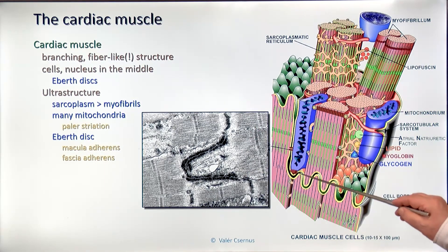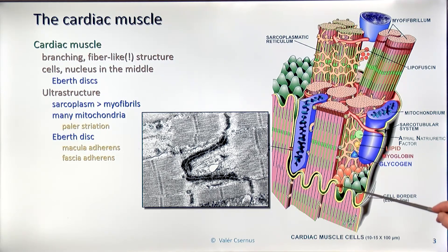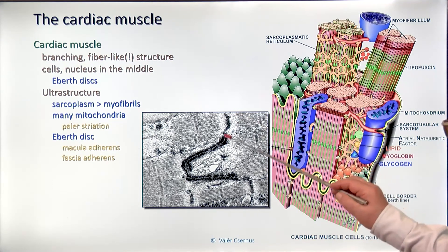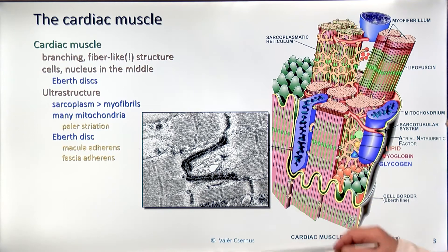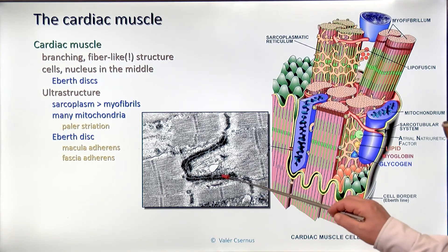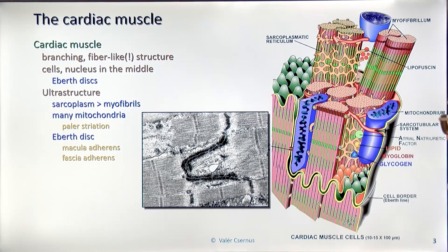The Ebner discs are the borderlines between the cells. They are wavy, finger-like processes. This is why the surface is increased, creating a much stronger attachment between neighboring cardiac muscle cells which pull each other — very important not to get broken away. In the electron microscopic picture, this connection between the cells is reinforced with macula and fascia adherens type binding structures.